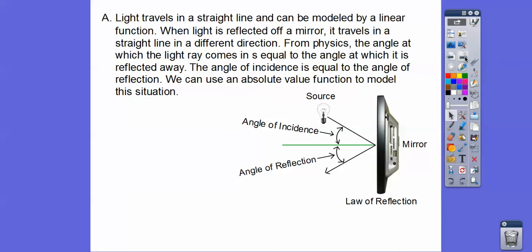Light travels in a straight line. So here's a light bulb right here. It can be modeled by a linear function. And when light is reflected off this mirror right here, here's a side view of a mirror, it travels in a straight line in a different direction. So here it is, it gets reflected off this way right here.